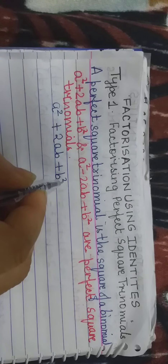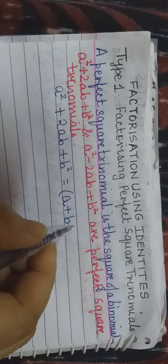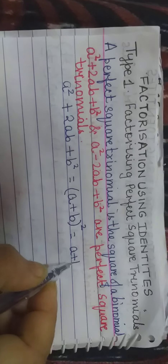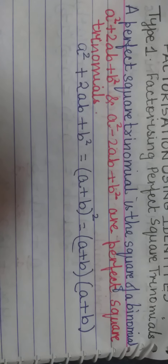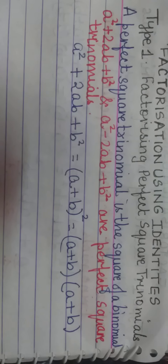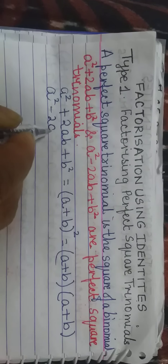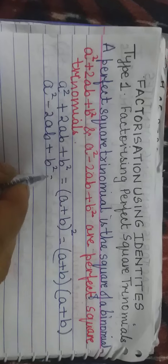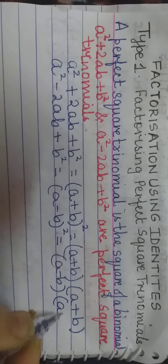Now a² + 2ab + b² — this was the formula for (a + b)². And what is (a + b)²? It is (a + b) into (a + b). So a² + 2ab + b² is a perfect square trinomial; it is the square of the binomial (a + b)². Similarly, a² - 2ab + b² equals (a - b)², which is (a - b) into (a - b).